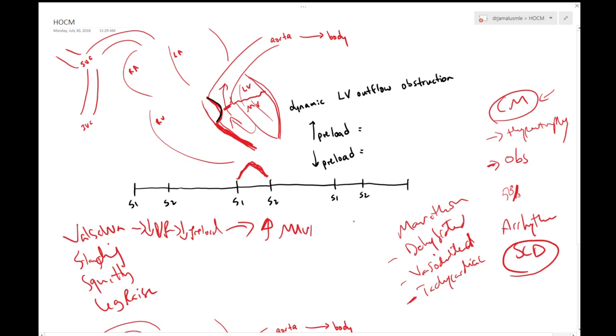Now if you stand up, what happened? There will be pooling of blood into the venous system, so that means that you have decreased venous return and same thing - decreased preload and then your murmur will increase in intensity.